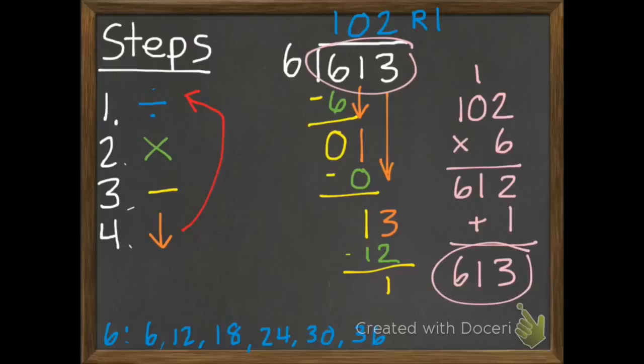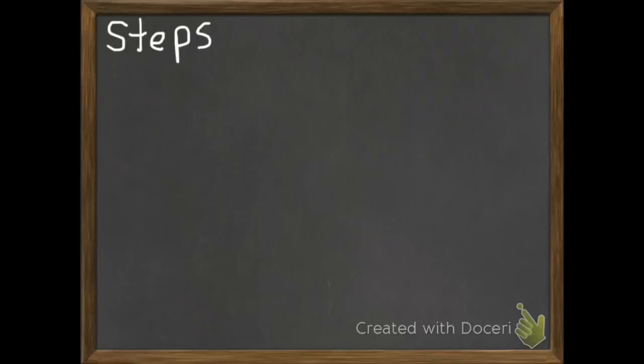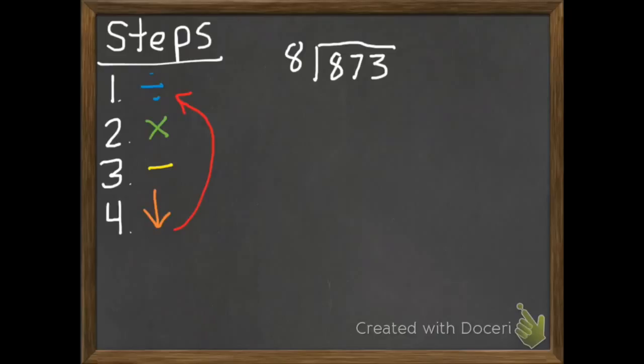Here's our second problem to do together. Make sure you're following your steps. Have faith in those steps. If you follow those steps, you won't be led astray. So here we go. New problem. 873 divided by 8. Put my 8's at the bottom. Going all the way to the end on this one.